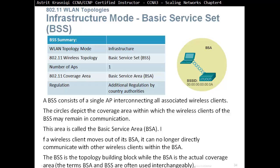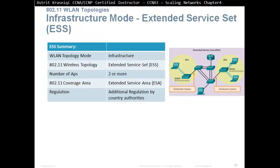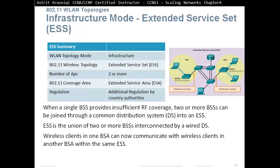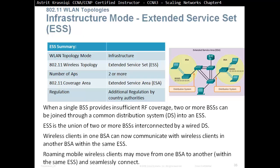An Extended Service Set, or ESS, is where two or more BSSs are joined together through a common distribution system. The ESS is the union of two or more basic service sets interconnected by a wired distribution system. Wireless clients in one BSA can communicate with wireless clients in another BSA within the same ESS. Roaming mobile wireless clients may move from one BSA to another within the same ESS and seamlessly connect.